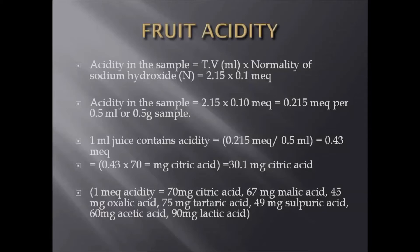If we are calculating in terms of propionic acid, we have to multiply the milliequivalents with 67 mg. If we want to calculate in terms of oxalic acid, we have to multiply with 45. If we want to calculate in terms of tartaric acid, we have to multiply with 75 mg. If we want to calculate in terms of sulfuric acid, we have to multiply this figure with 49 mg. If you want to calculate in terms of acetic acid, you have to multiply this with 60 mg. If you want to calculate in terms of lactic acid, you have to multiply the milliequivalents with 90 mg.